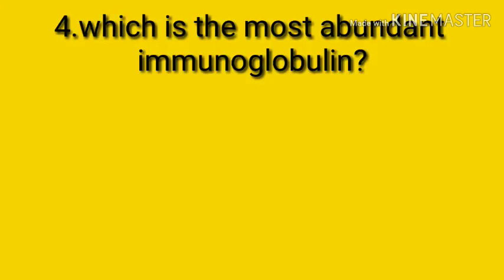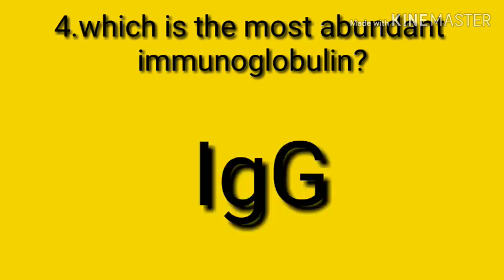Question number four: which of the following is the most abundant immunoglobulin? IgG. Immunoglobulin G is the most abundant immunoglobulin because IgG makes up about 85% of the total immunoglobulin.